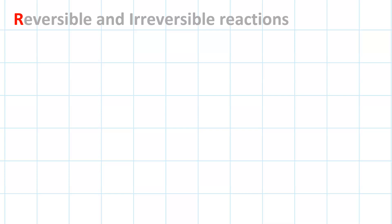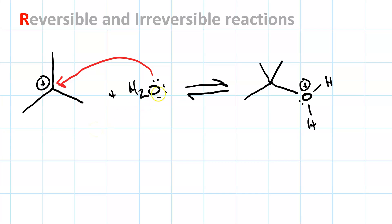Reversible and irreversible reactions. For instance, here I have water attacking a tertiary carbocation to make the conjugate acid of T-butanol. This is drawn as reversible with a double reaction arrow.